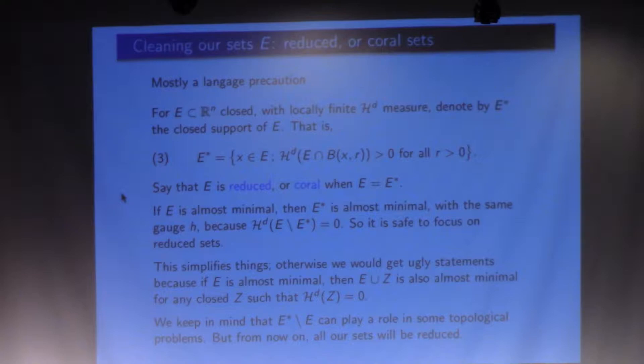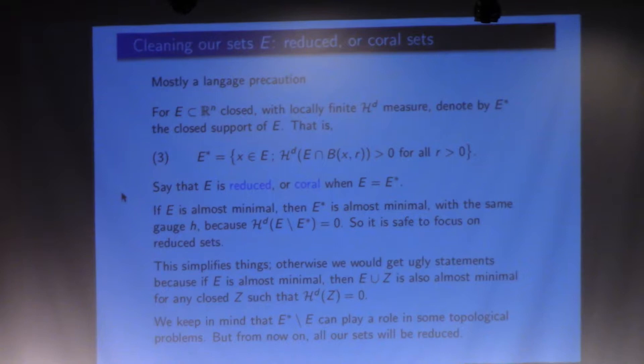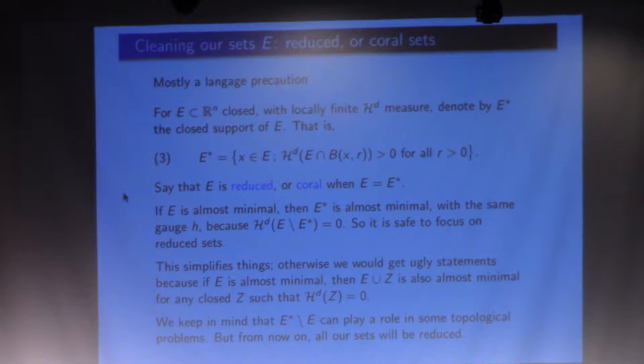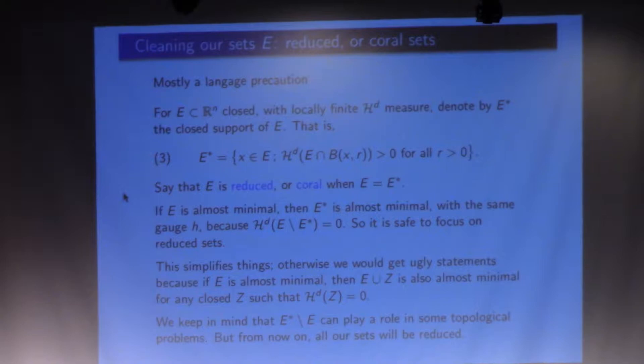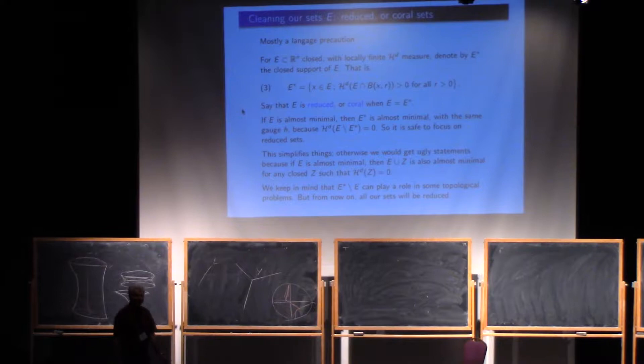Question from the audience: 'For the previous slide, at the bottom you have E* minus E, but isn't E* a subset of E?' — Sorry, yes, it should be E minus E*. I dearly hope that's the only error in my slides. You're right. The little red part here might have some topological interest, but I just throw it out.